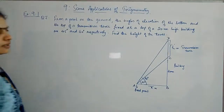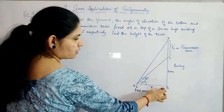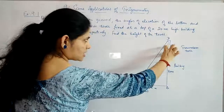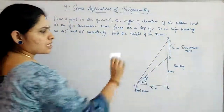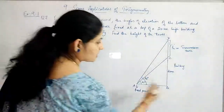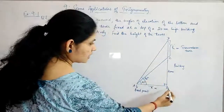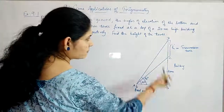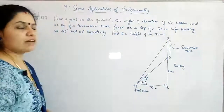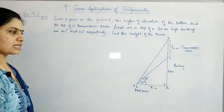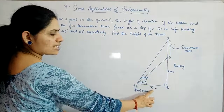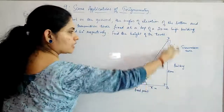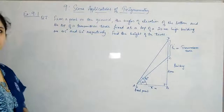Since we do not know the distance from the point to the foot of the building, we are taking it to be x, and the height of the tower is taken as h. We can consider two right triangles: triangle CAB with angle 45 degrees, and triangle DAB with angle 60 degrees. From the first triangle we will find x, then use the second larger triangle to find h.